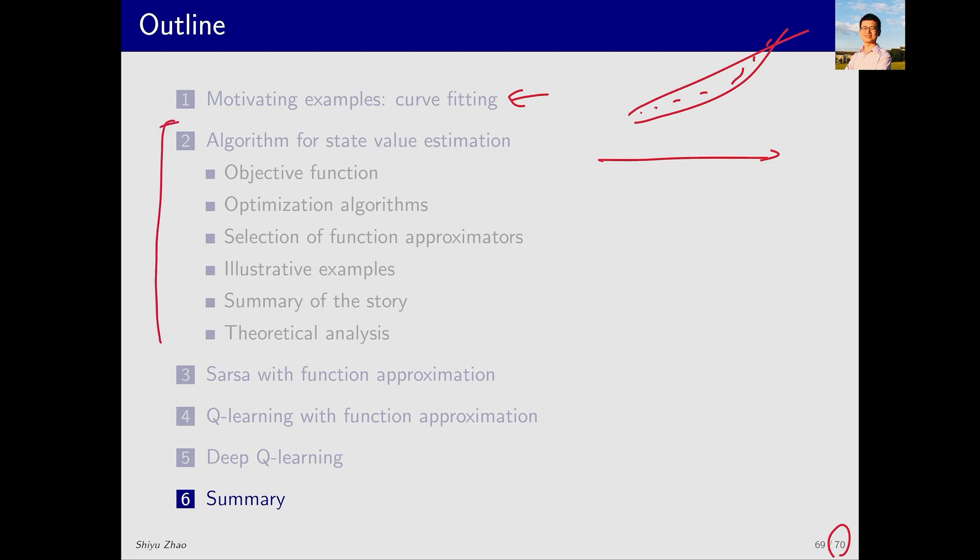In the second section, which was the main focus of this lecture and took up half of the content, we introduced the value function methods in detail. The key idea is to establish a scalar objective function and optimize it. We discussed how to choose this function—whether it should be linear or non-linear, based on polynomials or other forms. We then provided an example involving a 2D surface fitting problem, where the true V_pi(s) corresponds to a complex surface. Our goal was to approximate this complex surface as closely as possible with a simpler one. Afterward, we summarized this story. It is worth noting that the story is easy to understand but it is not rigorous. Then we briefly discussed the rigorous theoretical analysis. However, we didn't delve deeply into theoretical analysis in this session. Interested readers can check my book for details.